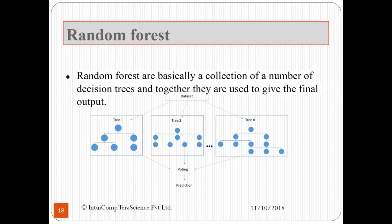Now let us come to our next topic, random forest. Random forests are basically a collection of a number of decision trees which together are used to give the final output. A dataset is fed to tree 1 through tree N, which are then compiled as votes, and the prediction is then laid out.